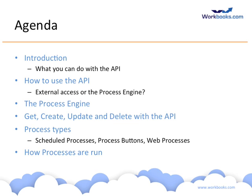Having decided that you want to use the API, we'll talk about how you do so — whether you would use external access, where an external service is accessing Workbooks remotely over HTTP, or whether you want to use the Process Engine, which is a little bit easier and is the preferred way of implementing most API integrations. We'll also cover the Workbooks API methods, which allow you to create, update, read, and delete records, plus special methods for fetching CSVs or running reports.